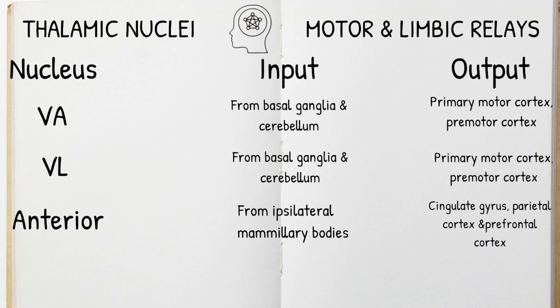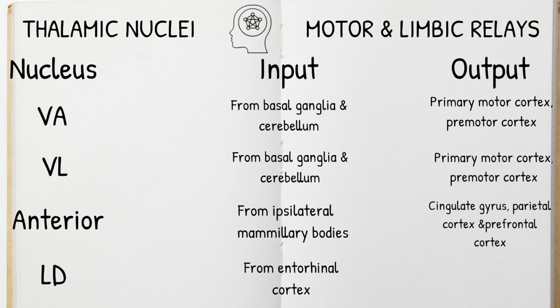Finally, we will deal with the lateral dorsal nucleus. This is involved in limbic function. It receives input from the entorhinal cortex, and it gives outputs to the parietal cortex and the cingulate gyrus.